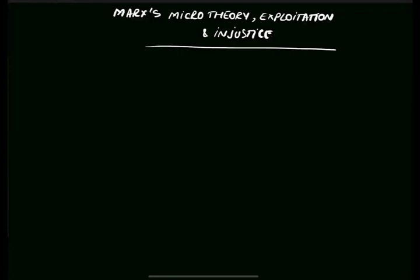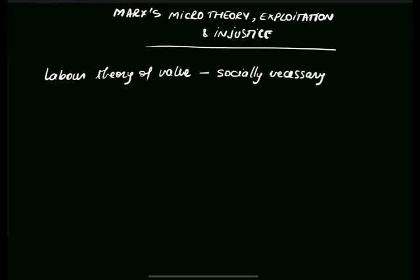Marx's theory starts with the idea of socially necessary labor time. As he defines it, socially necessary labor time is the labor time required to produce any use value. Remember that anything with utility — anything useful — has use value. So according to Marx, it's the amount of labor time required to produce any use value under the condition of production normal for a given society and with the average degree of skill and intensity of the labor prevalent in that society.